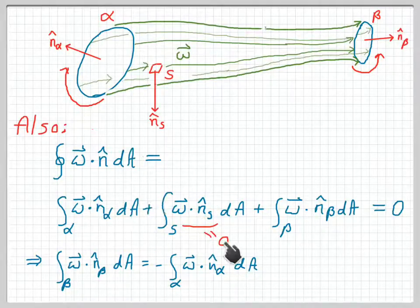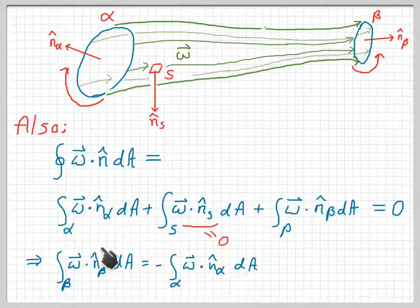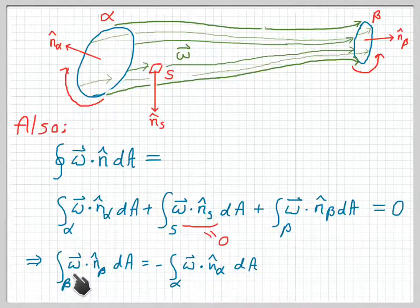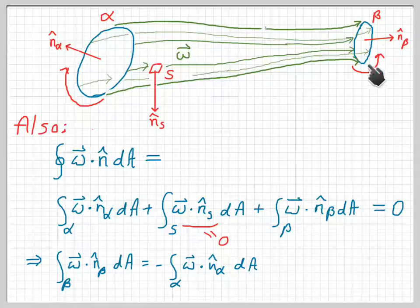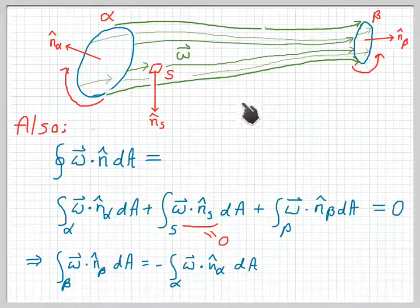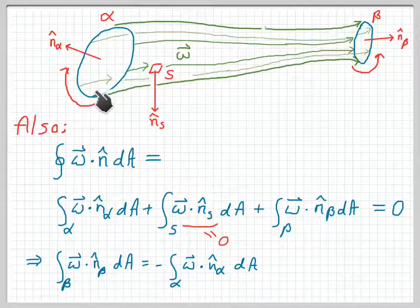The result is that the integral of omega dotted with the unit normal over cross section beta is the negative of the same integral over cross section alpha.